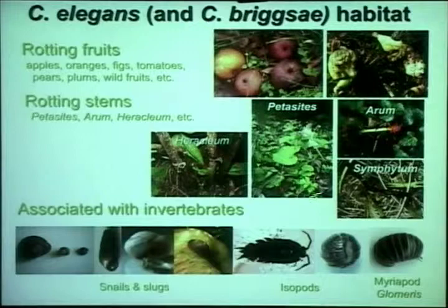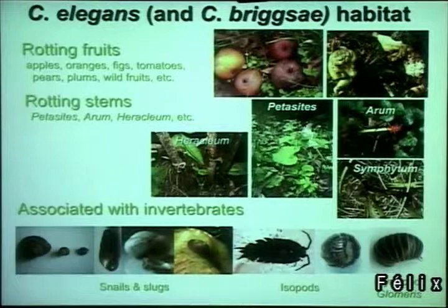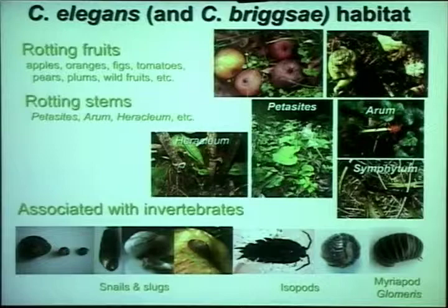We also find C. elegans, C. briggsae, C. remanei, and several elegans group species associated with invertebrates — isopods especially — and these are, as far as I can tell, dauer stages. But recently I found worms which were not in the dauer in slugs and snails as well.